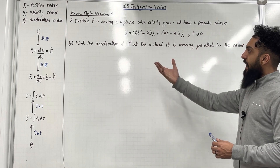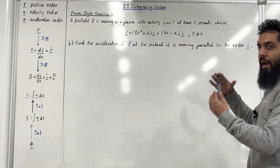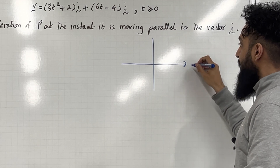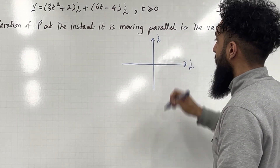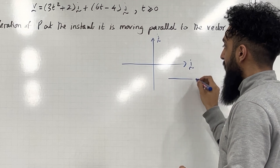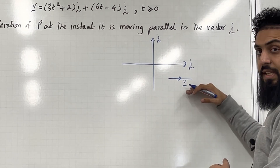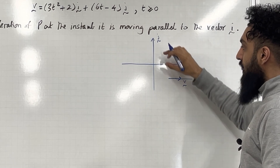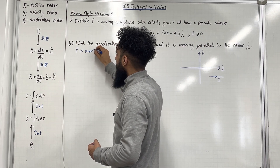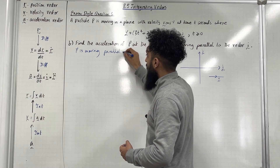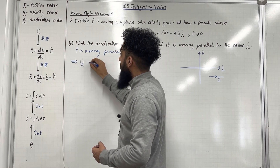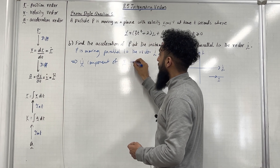Moving on to part B: find the acceleration of P at the instant it is moving parallel to the vector I. If we draw a coordinate grid, the horizontal axis is the I axis and the vertical axis is the J axis. We want particle P to move parallel to vector I, so the velocity vector will be in the I direction. This means the J component of the velocity vector must equal 0.